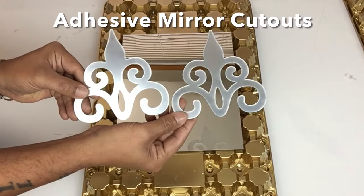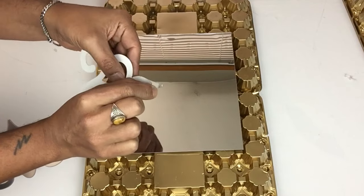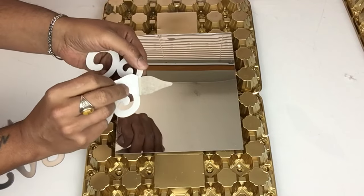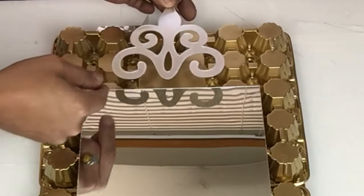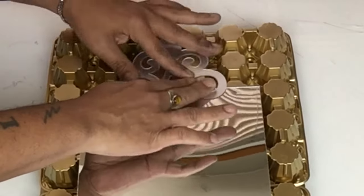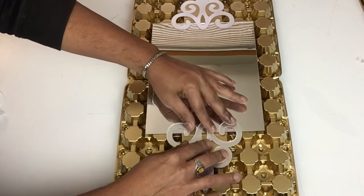I also used two self-adhesive mirror onlay cutouts and these have a protective film in the front and adhesive back. I placed one above the mirror and one below the mirror. Everything you see here I'll have a link below. I made two of these and I'll repeat the same steps on the second wall decor.